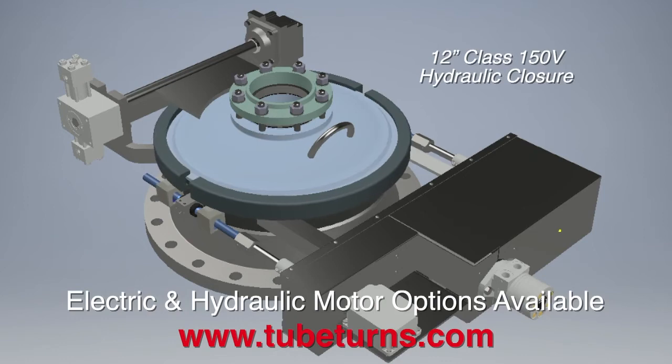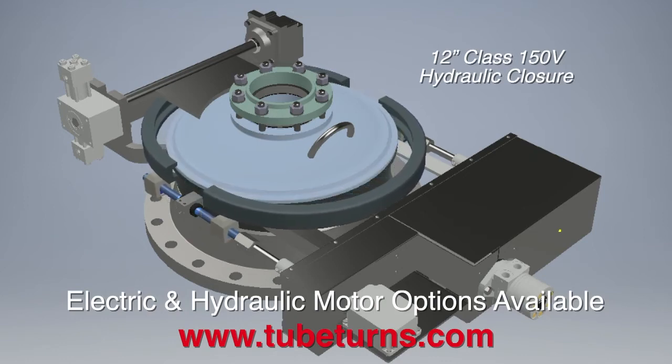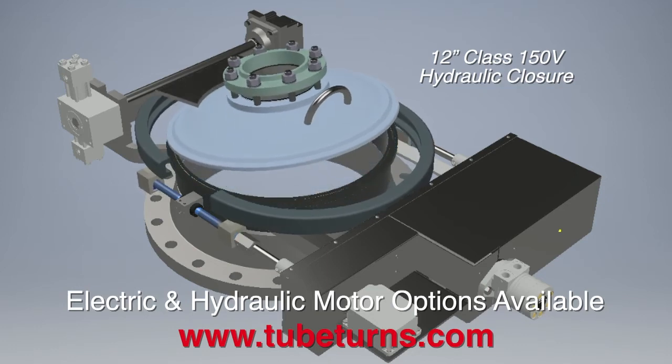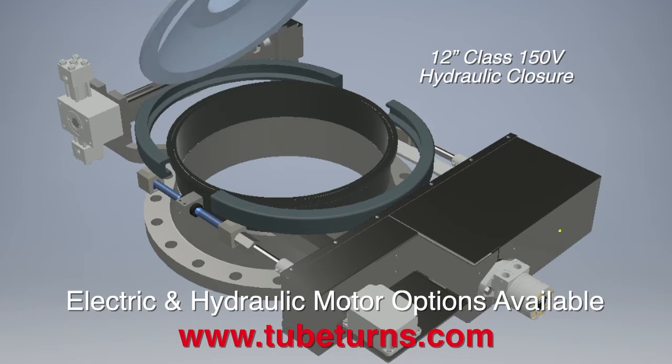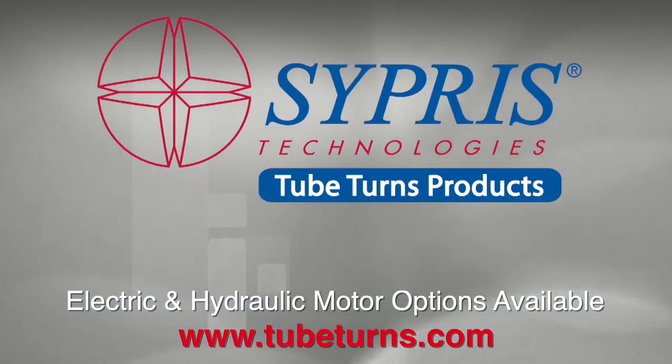Closures installed in high-pressure class working environments such as ASME 900, 1500 and 2500 that require high torque for closure operation are offered with a hydraulic driven mechanism. Closures can be shipped with a hydraulic power pack and pump or integrated into the customer's existing hydraulic system.